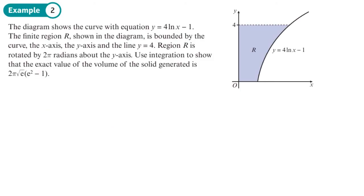The diagram shows a curve with equation y equals 4 log x minus 1. The finite region R is shown in the diagram and is bounded by the curve, the x-axis, the y-axis and the line y equals 4. So I've got my limits of 4 and 0, so b is going to equal 4 and my lower limit a is going to equal 0.